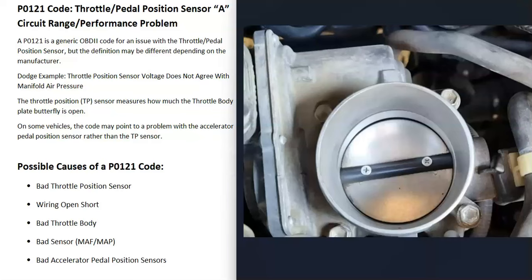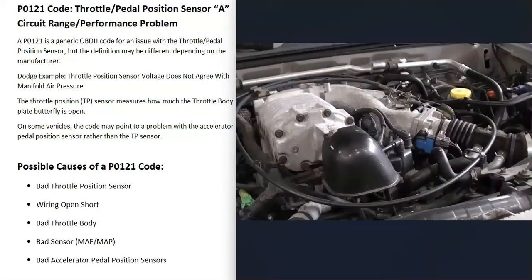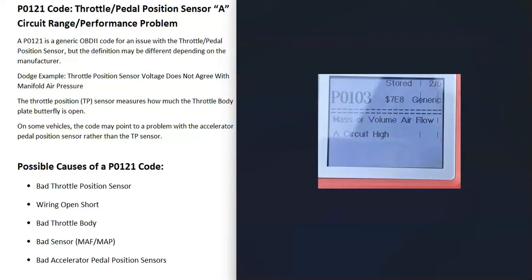The next cause is going to be a bad throttle body. Depending on the vehicle and the computer, it also uses inputs like the mass airflow sensor or the manifold absolute pressure sensor to know where the throttle body butterfly plate is and how open it is. Usually if that's the case, you're going to get other codes. For example, if you've got a P0103 code — mass or volume airflow circuit high — that would point to a mass airflow sensor issue. So if you are getting other codes, be sure to pay attention to those.